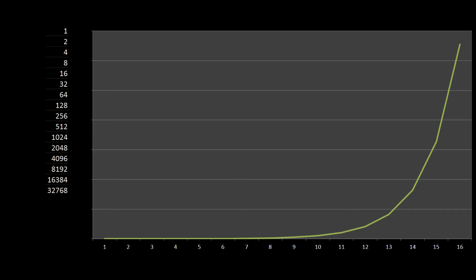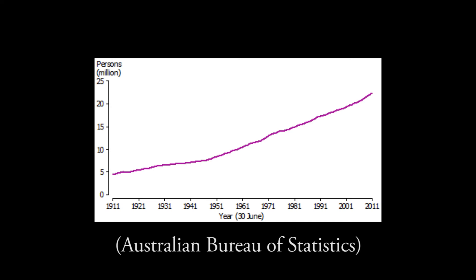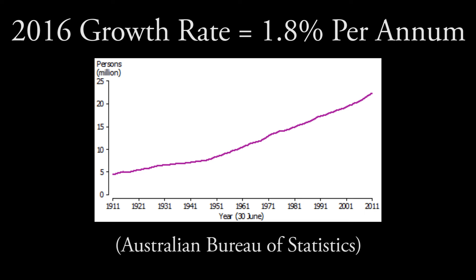Exponential growth isn't just about doubling the last number — it's about increasing the last number by a certain ratio. So if your next number is 3% larger than the last one, this is also exponential growth. A hundred years ago, in 1916, Australia's population was about 5 million people. Today it's 24 million, and our current rate of growth in 2016 is 1.8% per year.